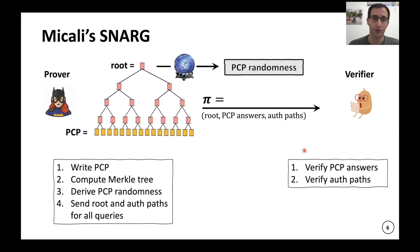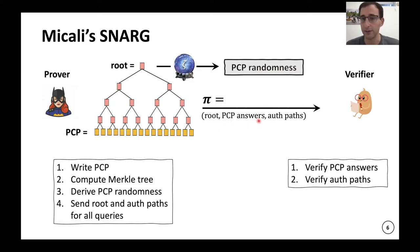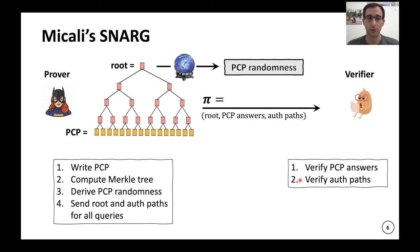In slightly more detail for Micali's construction: the prover writes a PCP for the statement that X is in the language, takes this PCP, computes a Merkle tree, gets the root, applies the random oracle on the root to derive PCP randomness — the randomness for the verifier — which defines the queries the verifier wants to read. The proof contains the root, all the PCP answers at the queried locations, and all the authentication paths ensuring those answers are what was committed to under this root. The verifier checks the PCP answers and for each answer checks the corresponding authentication path.